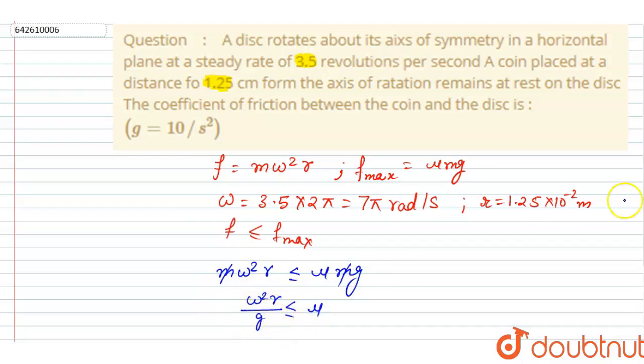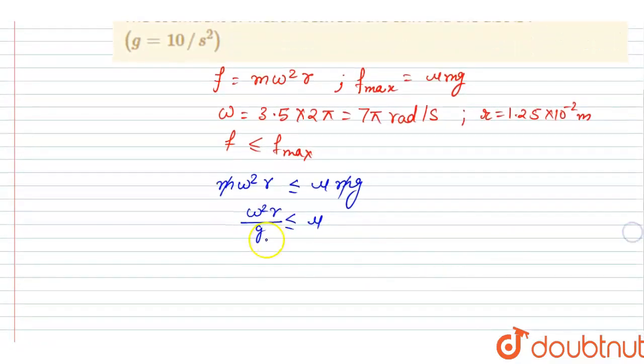If you calculate the value of omega square r, if you put the value of omega and r in this equation, you will write 7 pi whole square, that is omega square, into 1.25 into 10 to the power minus 2 divided by g should be less than or equal to mu.